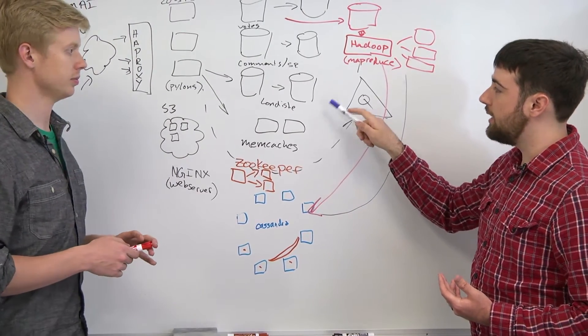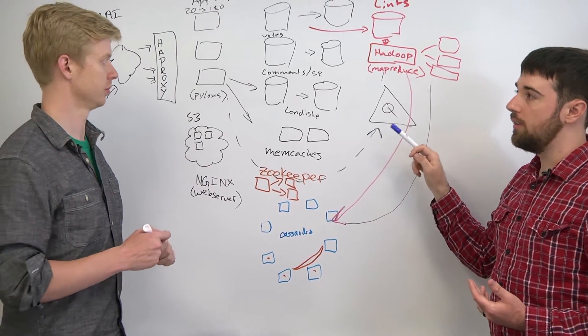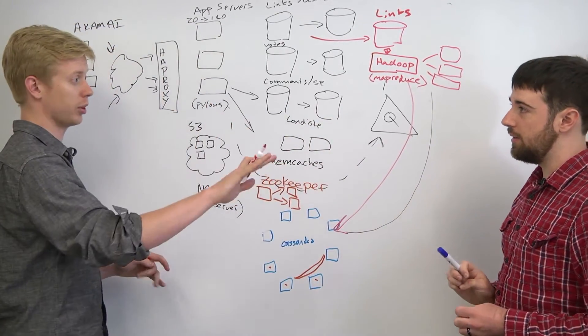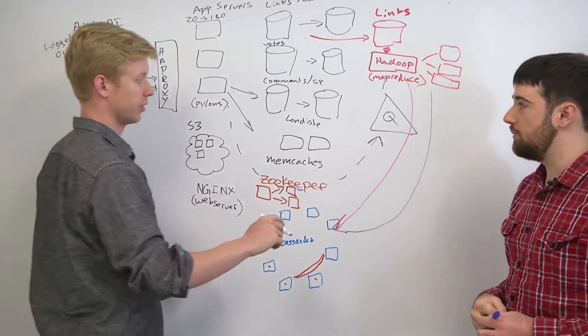So we actually have a dedicated comment slave that is just for the likes of Google. There's a whole separate stack for Google, right? And it's read-only.